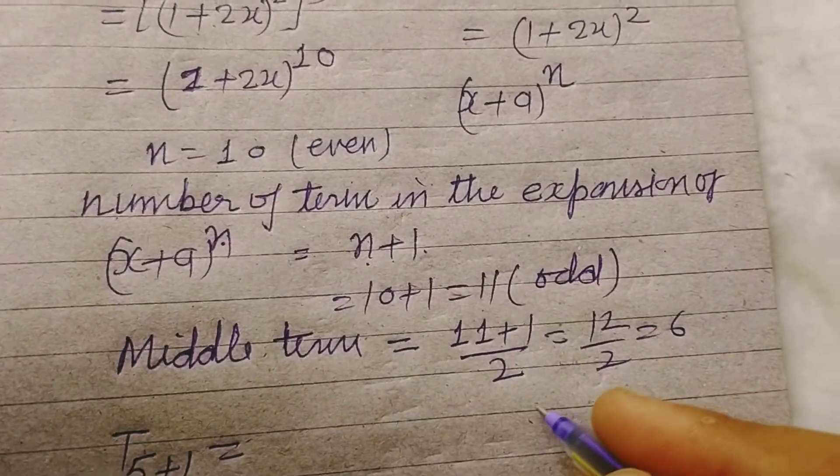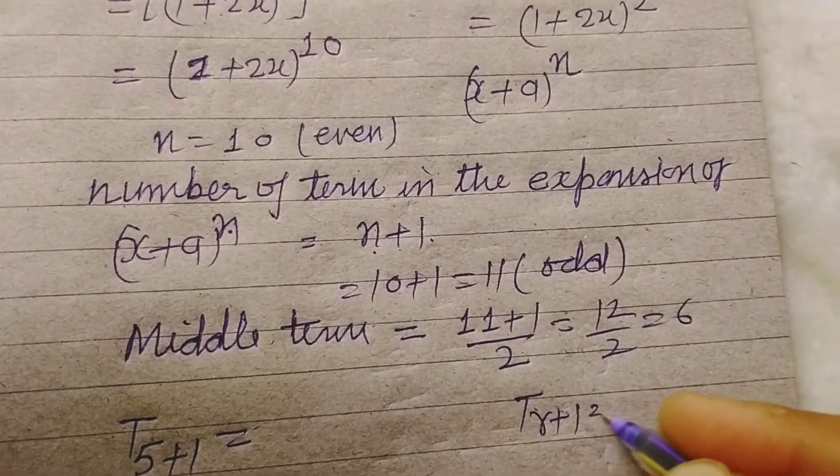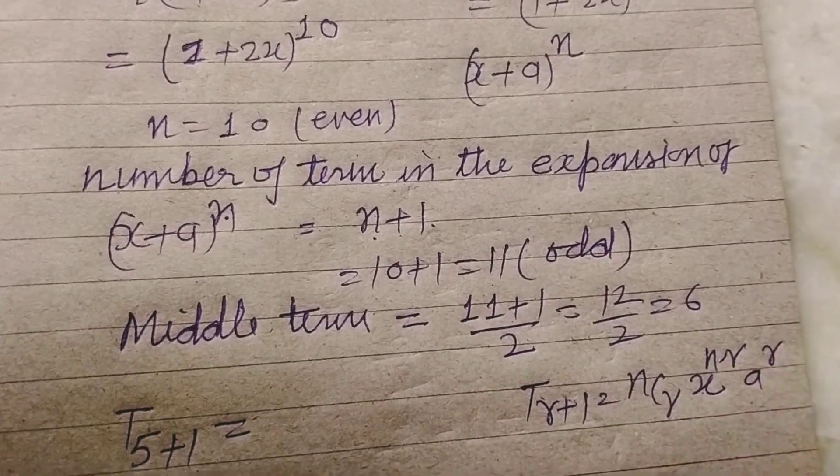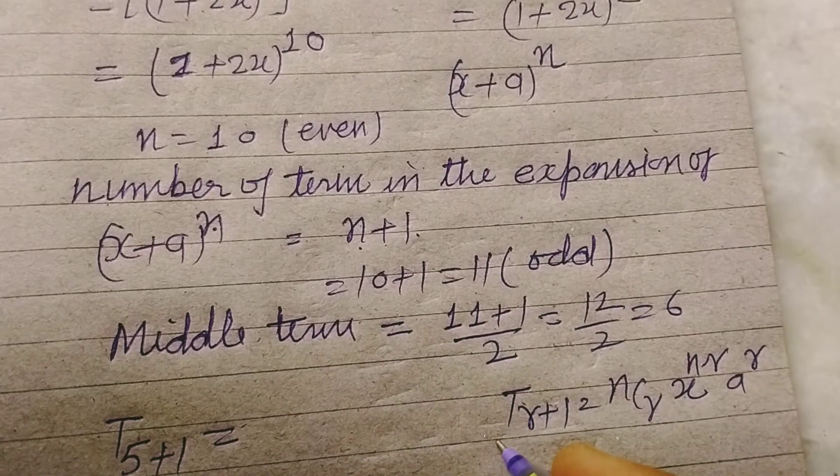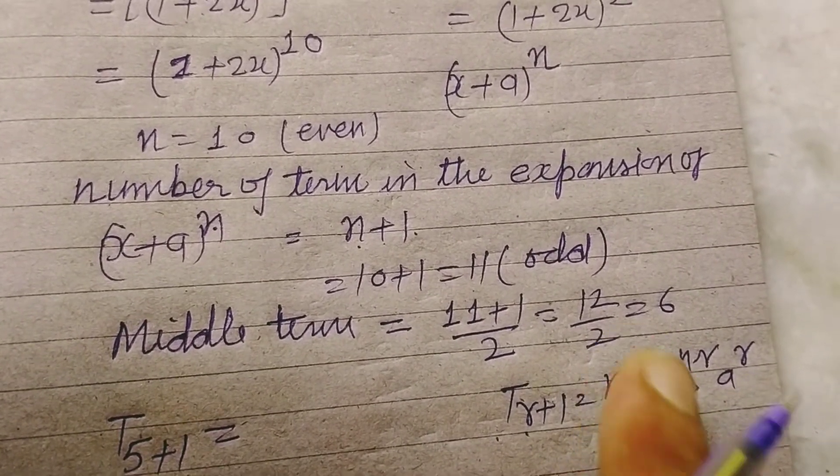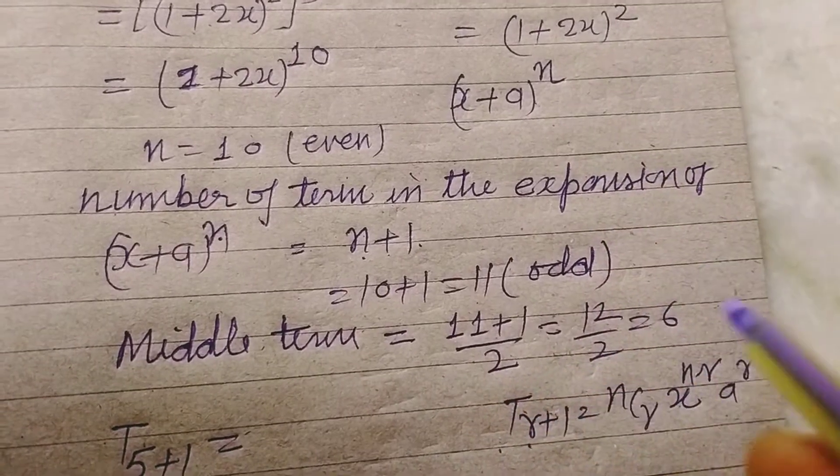t r plus 1. t r plus 1 equals n c r times x to the power n minus r times a to the power r. So this is the rth term in the expansion of x plus a to the power n.